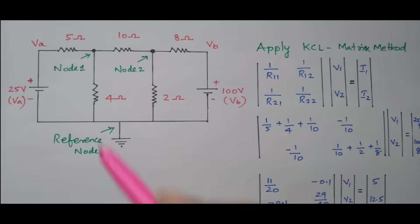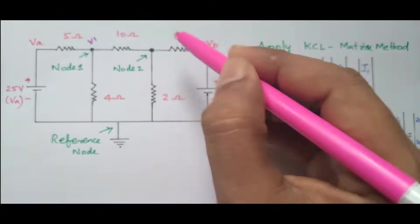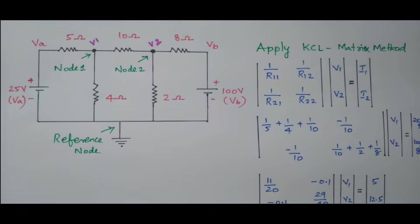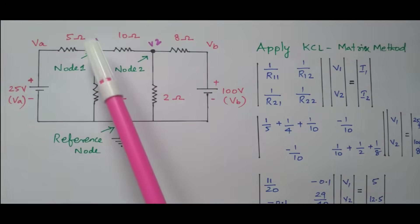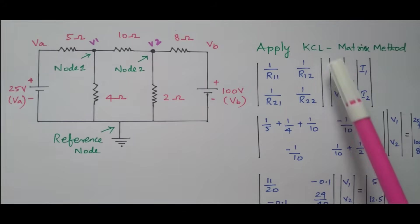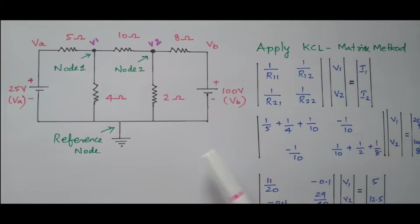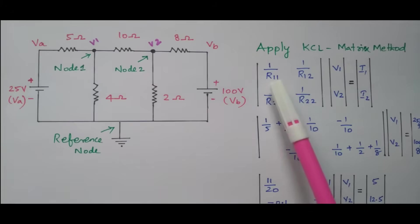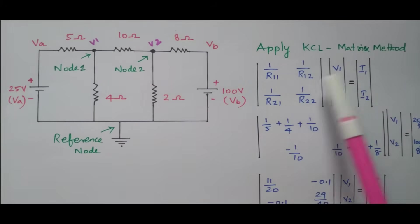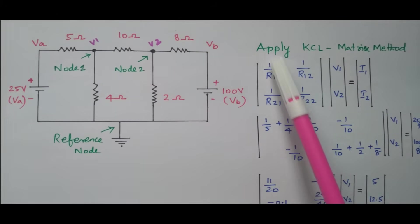The voltage at node 1 is V1, and here is V2. We have a reference node and two different nodes. Our aim is to find the node voltages V1 and V2 using the matrix method. We apply Kirchhoff's current law: I equals V by R. This gives us the current matrix, the voltage matrix, and the resistance matrix, where elements are expressed as 1 divided by R.